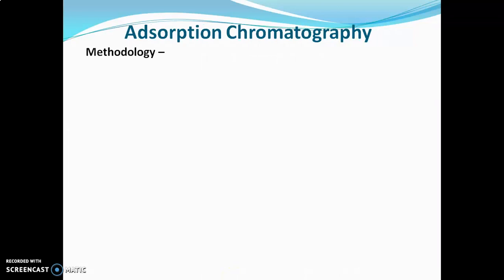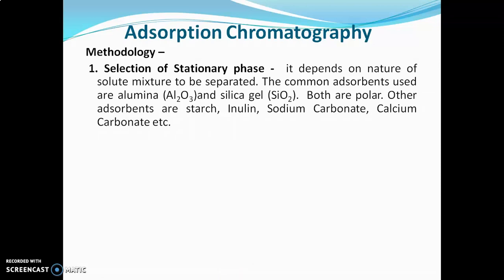The methodology of adsorption chromatography: the first step is selection of the stationary phase. It depends on the nature of the solute mixture to be separated. The common adsorbents used are alumina and silica gel, both of which are polar in nature. Other adsorbents include starch, inulin, sodium carbonate, calcium carbonate, etc. Generally for non-polar samples, polar stationary phases are used, and for polar samples, non-polar stationary phases are used.